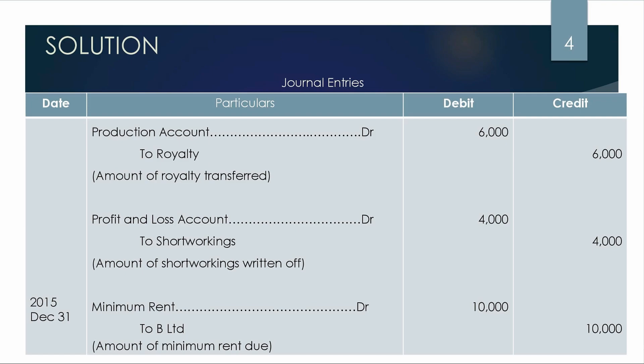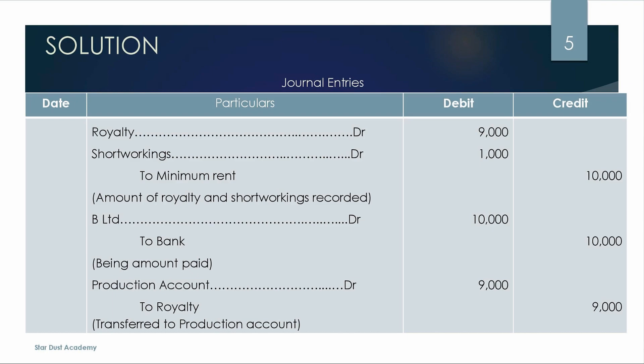In the next year, the minimum rent to B Limited is Rs.10,000. In 2015, we have 900 tons in production. 900 tons into Rs.10 = Rs.9,000 royalty. The difference between Rs.10,000 and Rs.9,000 is Rs.1,000, which is short working.